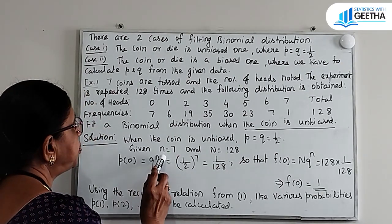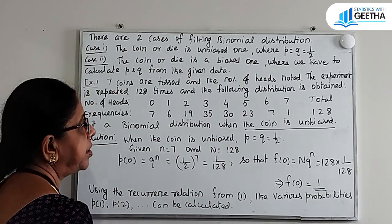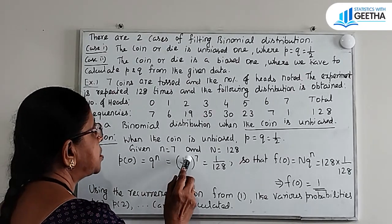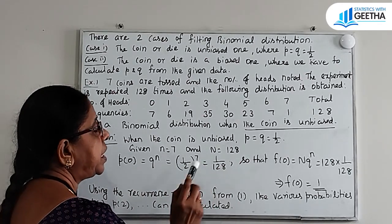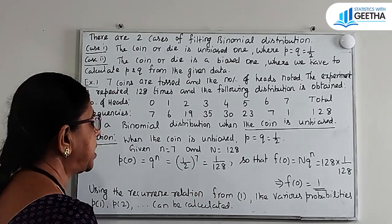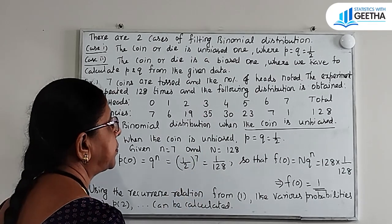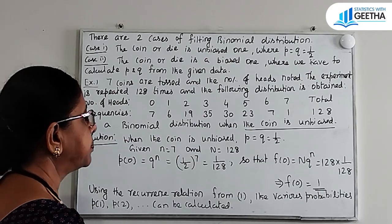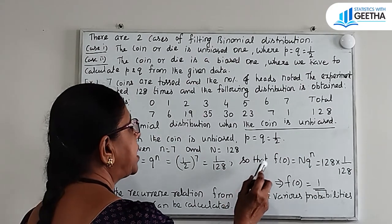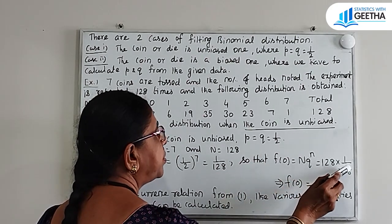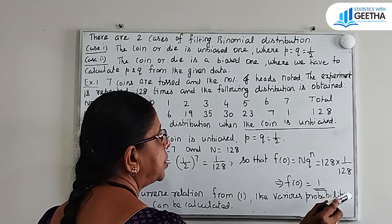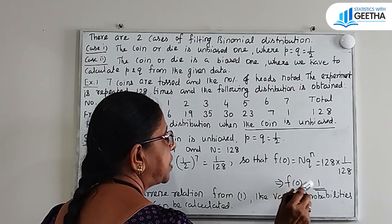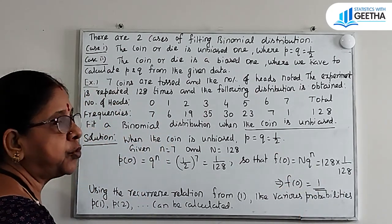We calculate P(0) = q^n = (1/2)^7 = 1/128, since 2^7 = 128. So the first expected frequency F(0) = N × q^n = 128 × (1/128) = 1. The observed frequency and expected frequency match here.